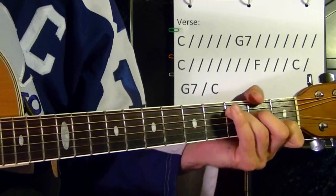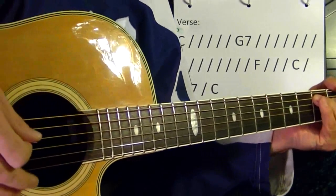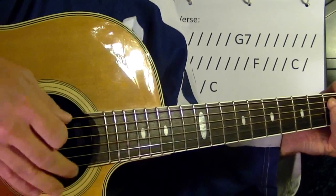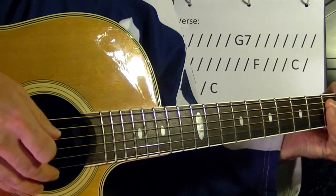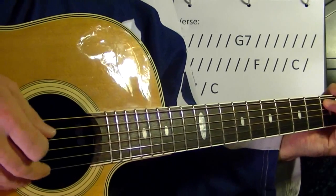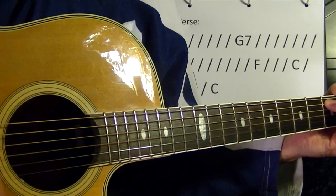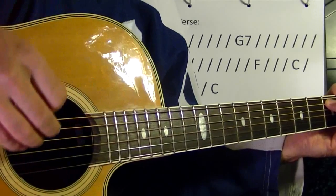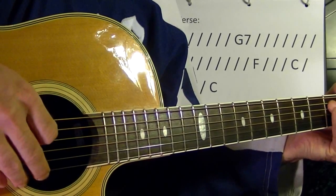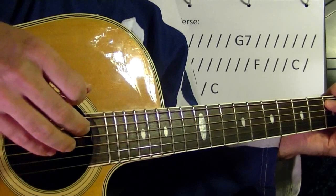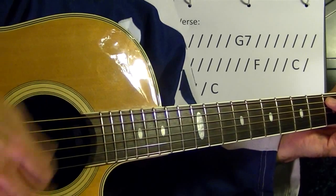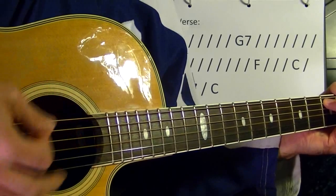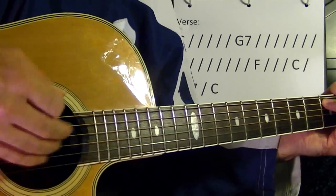First of all, the rhythm is like this: one, two and three and, like one, two and three and four. So you play the downbeat, the top one, and strum the bottom strings on the 'and'—one, two and three and.